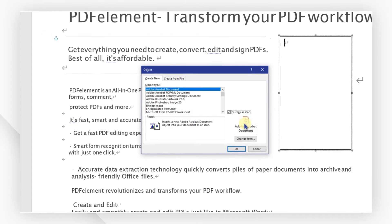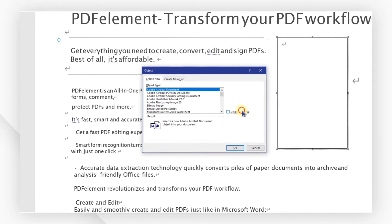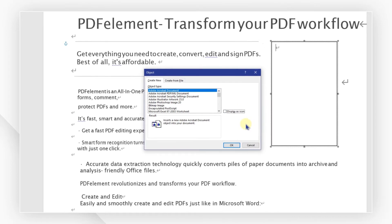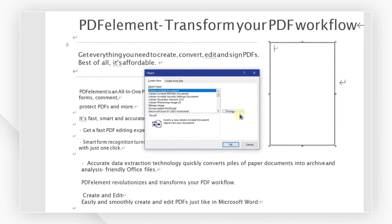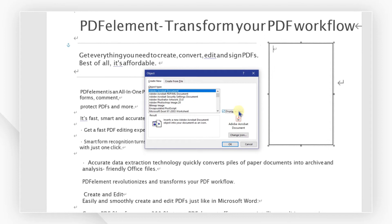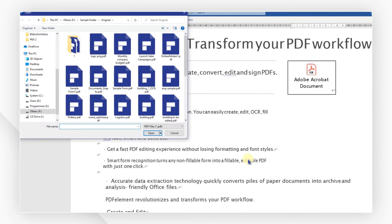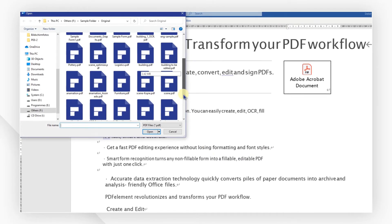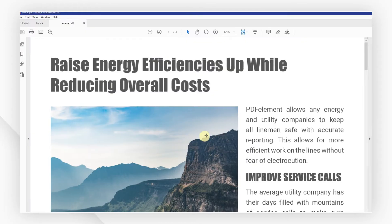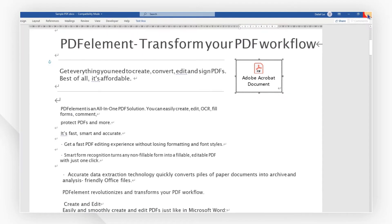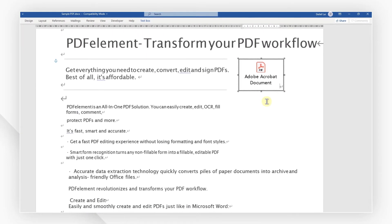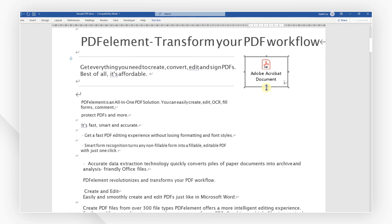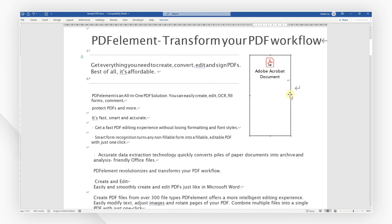If you leave the option unchecked, the first page of the PDF will be displayed. I'm going to select it and then click OK to browse and choose the PDF file you want to insert. Close the preview of the PDF file. Now you can see the PDF file has already been inserted and displayed as an icon.